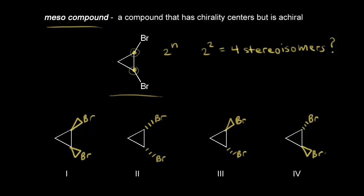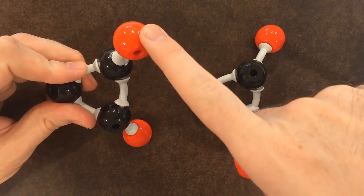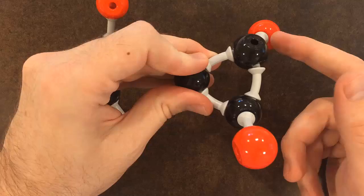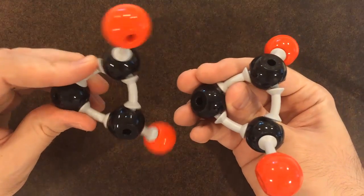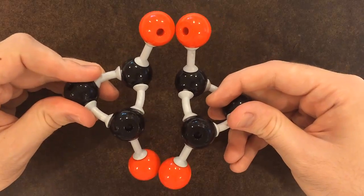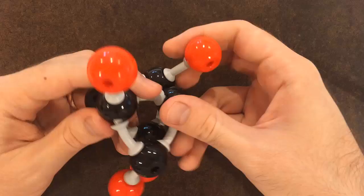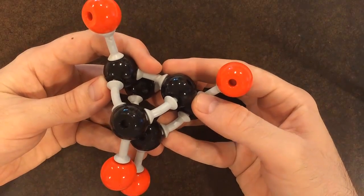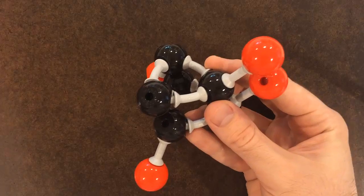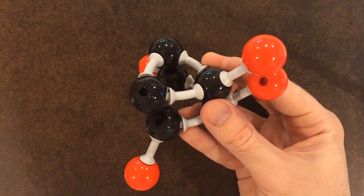Let's examine the relationships between our stereoisomers, starting with stereoisomer possibilities three and four. On the left is stereoisomer three — we can see there's a bromine coming out at us and a bromine going away from us. On the right is stereoisomer four, with a bromine going away from us at the top carbon and a bromine coming out at the bottom. If I rotate the one on the right, we can see these are mirror images of each other. If I try to superimpose one on top of the other, here we get one pair of bromines to line up, but the other pair doesn't match. So these are non-superimposable mirror images of each other — these are enantiomers.